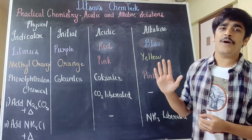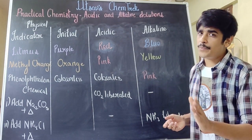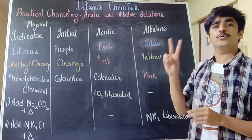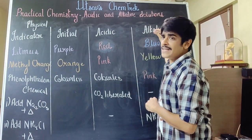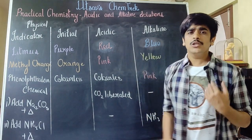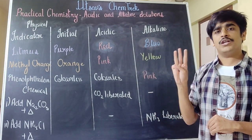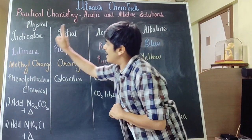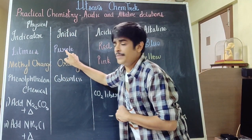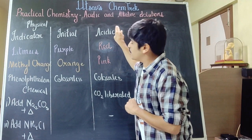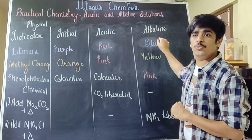Let's start with the fifth part of the chapter, where we differentiate between two solutions — one acidic and one alkaline. The most obvious thing to use is indicators, which are three in number. The first one is litmus. The initial colour is purple. The moment you add it to an acidic solution, it turns red, and the moment you add it to an alkaline solution, it turns blue.